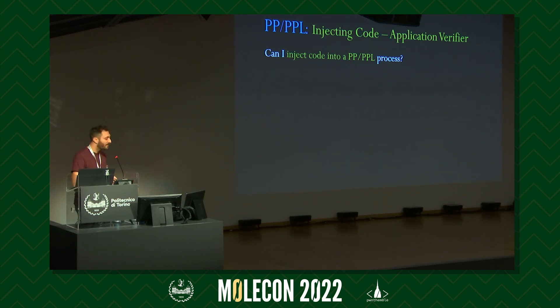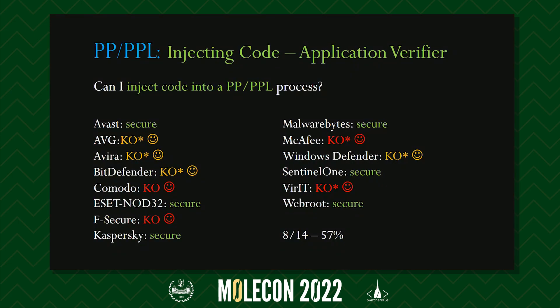Testing this attack against various antivirus products showed much better results than the process suspension technique. Orange-marked antivirus products only allow some subset of their processes to be killed this way. Red-marked products don't employ PPL at all — which is frankly shameful since you should rely on OS protection rather than reinventing the wheel. Following responsible disclosure, this type of attack no longer works on patched products, but it's always good to double-check since bugs can be reintroduced.